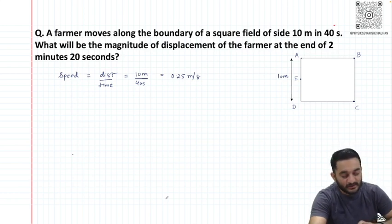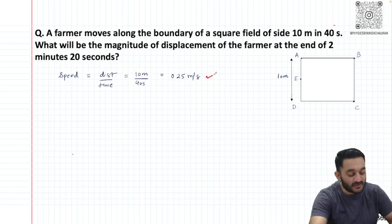First we will calculate the speed of the farmer using distance over time. The farmer traveled 10 meters in 40 seconds, so speed is 0.25 meters per second.